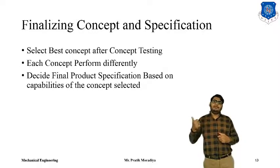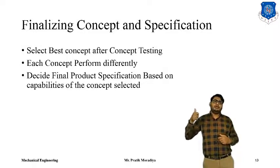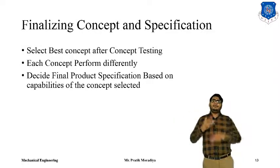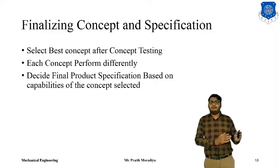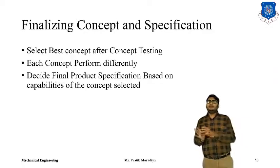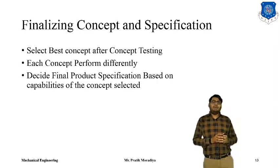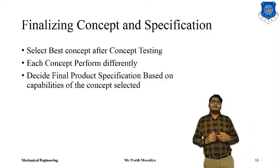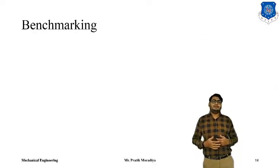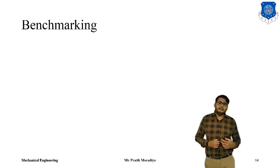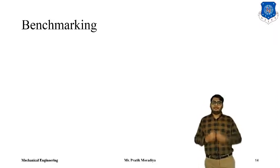The actual specifications differ from the target specifications — first we have the target specification which we wanted to achieve, but after concept testing and all the processes followed through, those specifications might change, and mostly they will change. So after a concept is selected, we decide the final specification. After the final specifications are decided, we go for the benchmarking process.